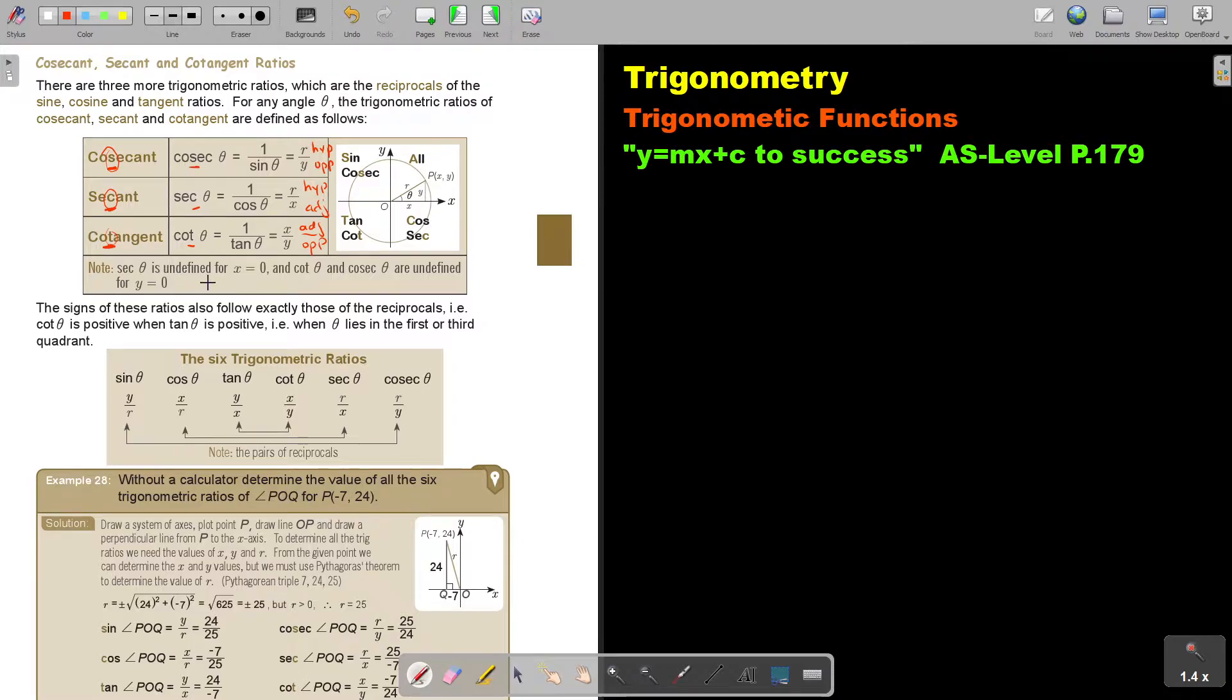Note, sec is undefined for x is equal to zero. And cot and cosec are undefined for y is equal to zero. As soon as I find the opposite or the adjacent or the opposite, if that becomes zero, do you follow? As soon as y or x becomes zero, then it's undefined because you cannot divide by zero.